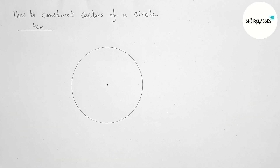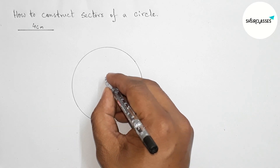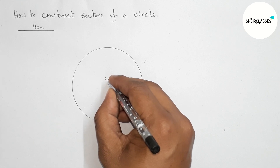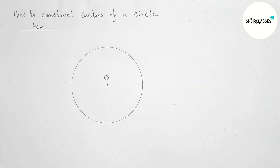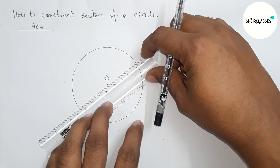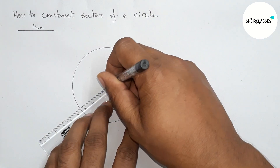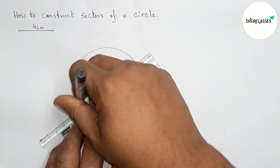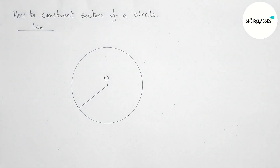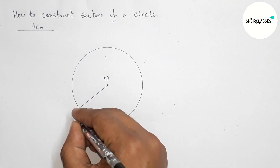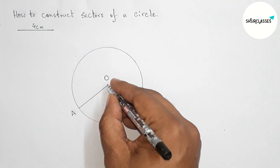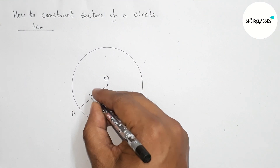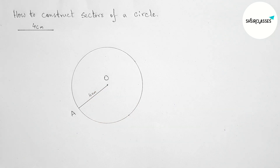Drawing the circle — this is a perfect circle. Taking the center point as O. Next, joining from center to circumference, and since this is a radius, taking point A here. So OA is the radius of 4 centimeters.